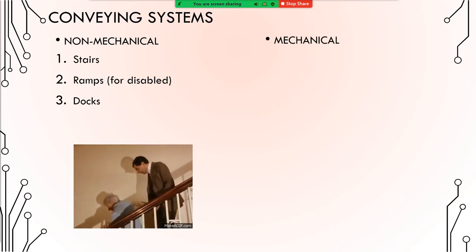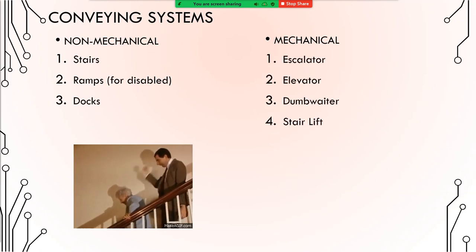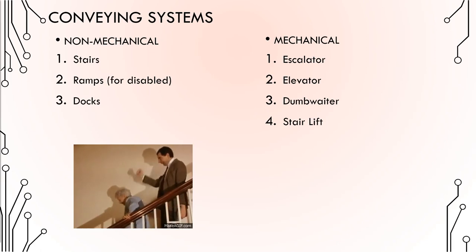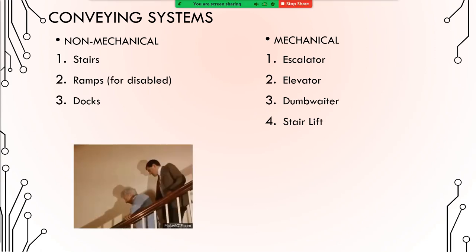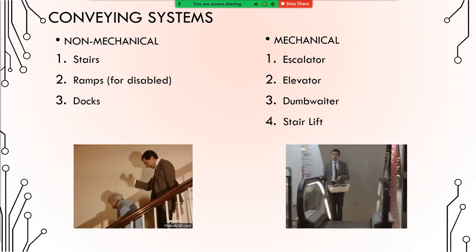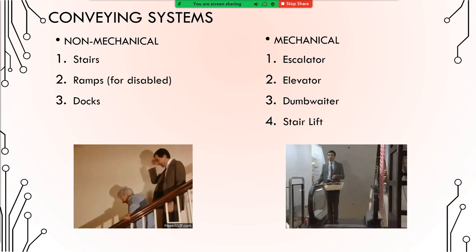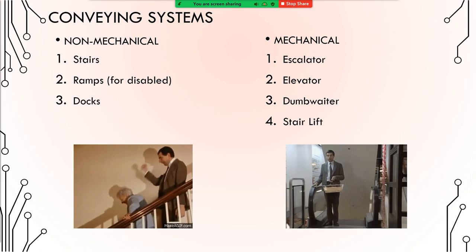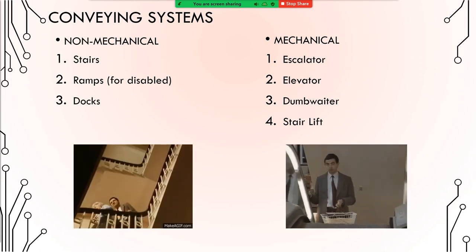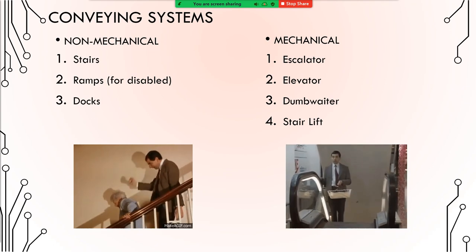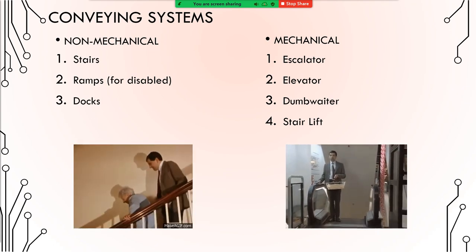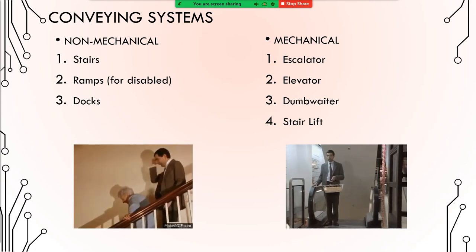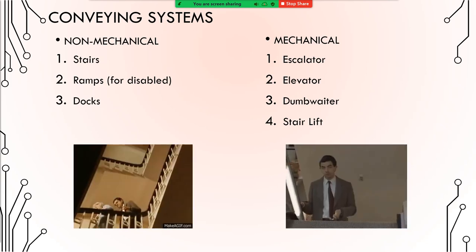For the mechanical conveying systems, included are the escalator, elevator, dumbwaiter, and stair lift. The difference between non-mechanical and mechanical: in non-mechanical, you need to use your feet. In mechanical, you simply ride the escalator tread or the elevator car, and you are automatically transported vertically.